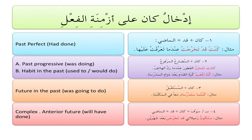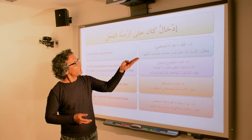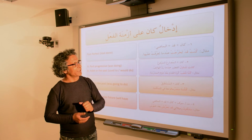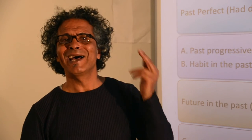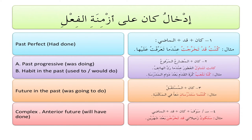Now, combining Kana with the tenses that we have learned to get subtle aspects of the tense. كان مع قد مع الماضي gives us the meaning of the past perfect — 'had done.' Some people like to call this the past of the past. Look at the example: كنت قد تخرجت عندما تعرفت عليها — I had already graduated when I met her.